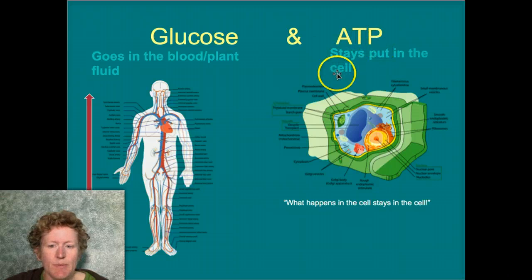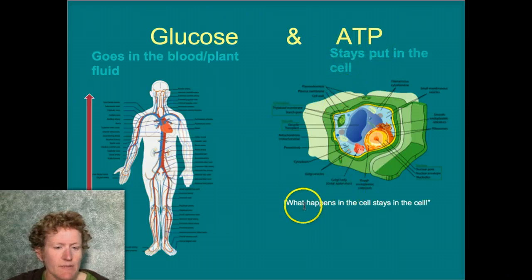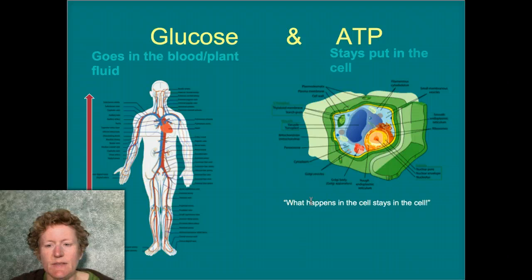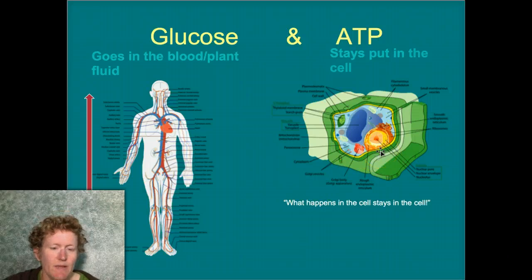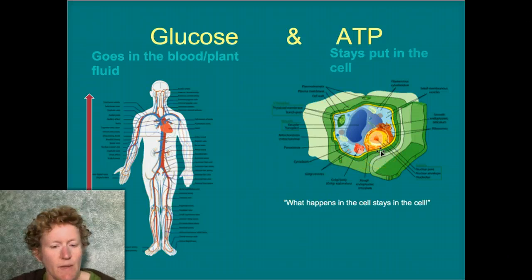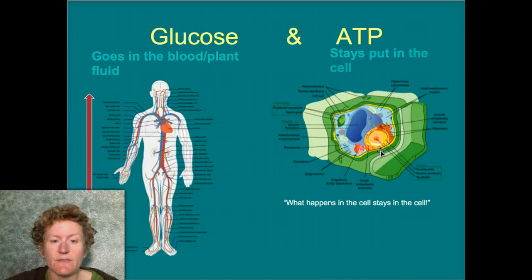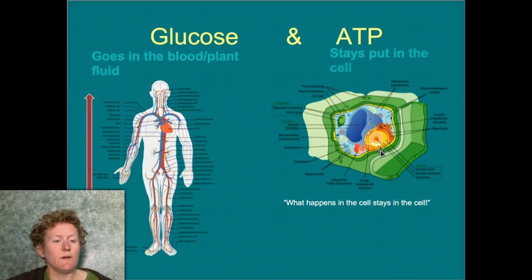Glucose travels around the body — the G and O in glucose stand for GO. It goes around in the bloodstream, or in plants through the xylem and phloem. ATP stays put in the cell — like Vegas, what happens in the cell stays in the cell. ATP is made there, used there. Glucose goes; ATP does not.